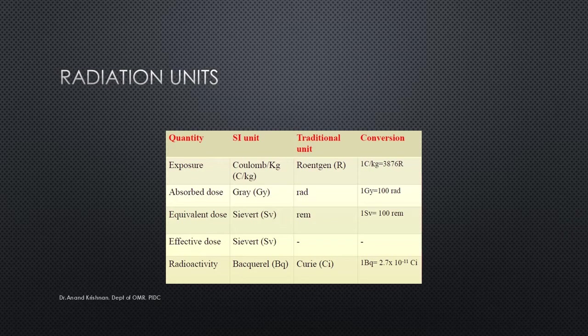The equivalent dose SI unit is sievert and the traditional unit is rem. The effective dose is also quoted in sievert. Radioactivity is measured in becquerel and the traditional unit is curie. In most cases, quantities are given in SI units rather than traditional units. Traditional units are generally restricted to certain countries — for example, the UK and some European countries — but in general we now follow SI units.